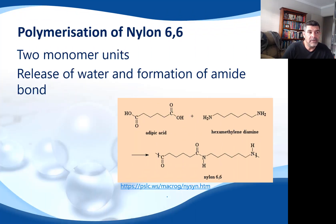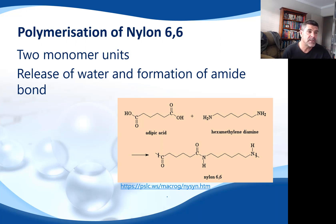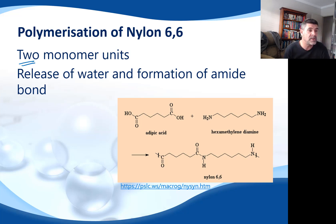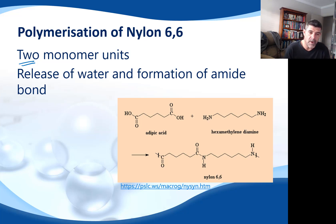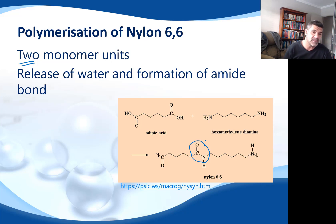The other form of nylon — probably a little bit easier to reproduce in the laboratory — is nylon 6-6. The difference between this one and the previous formation of nylon is that it actually has two separate monomer units. We still have an amine combining with an acid to release a water molecule and form the amide bond, but this time we have two different monomers, so we'll be alternating between them as the polymer grows.